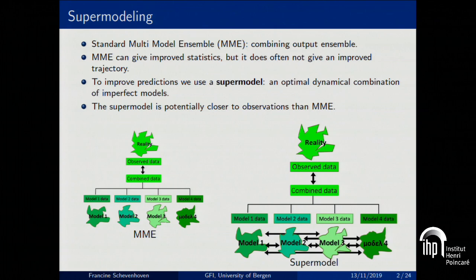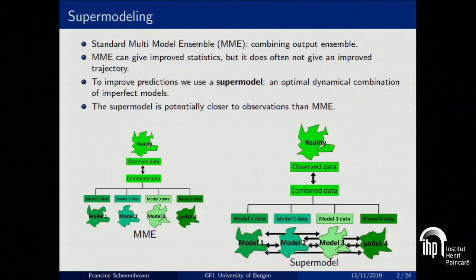The spread between the models can give you a measure for uncertainty. So a multimodal ensemble can give you improved statistics like mean and variance. But it often does not give you an improved trajectory. That's because if you average the trajectories of the independent models, you average uncorrelated trajectories. So you will suffer from variance reduction and smoothing.